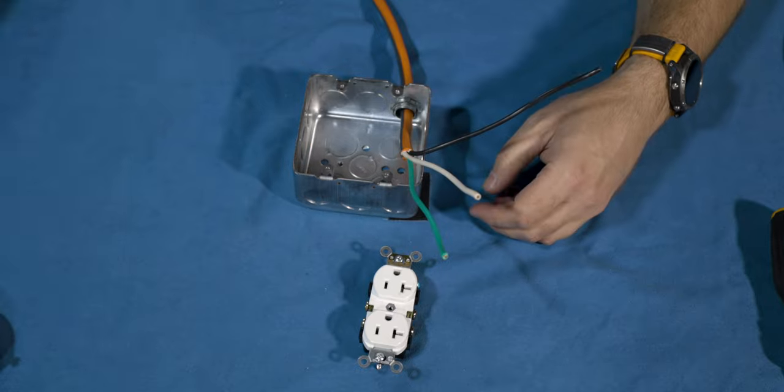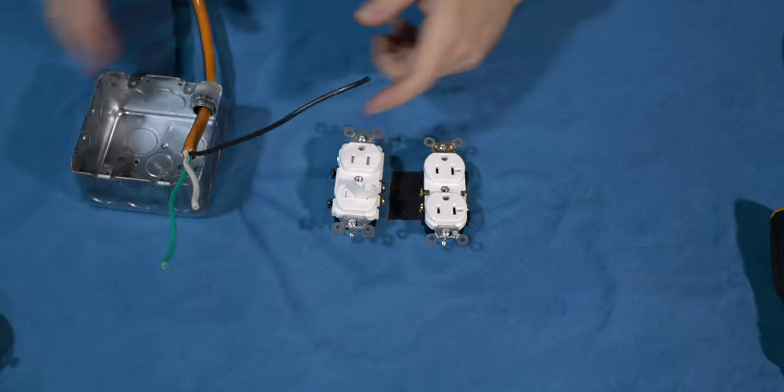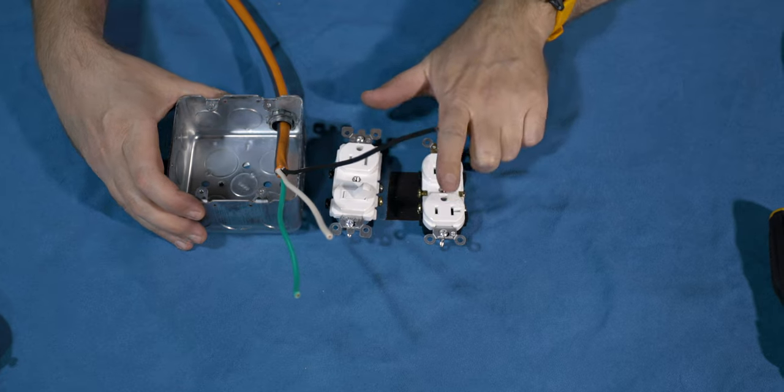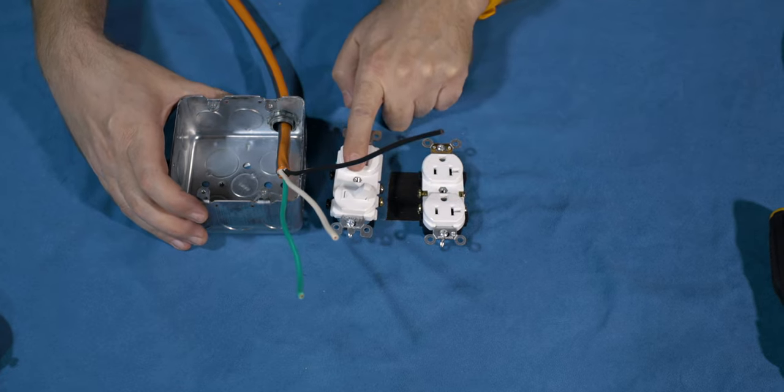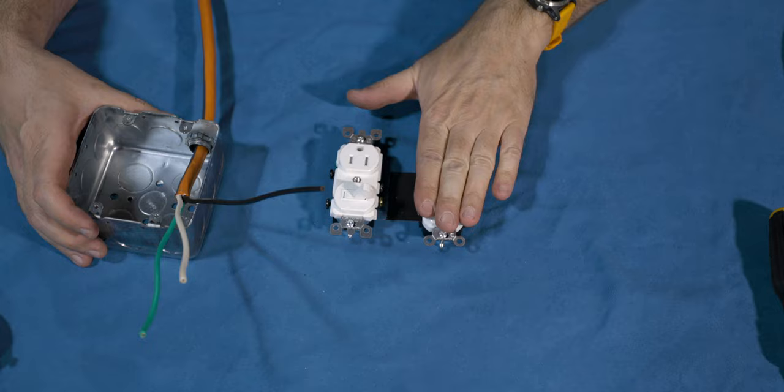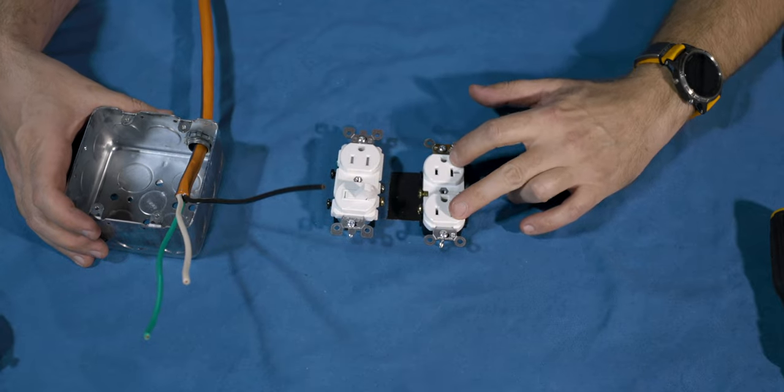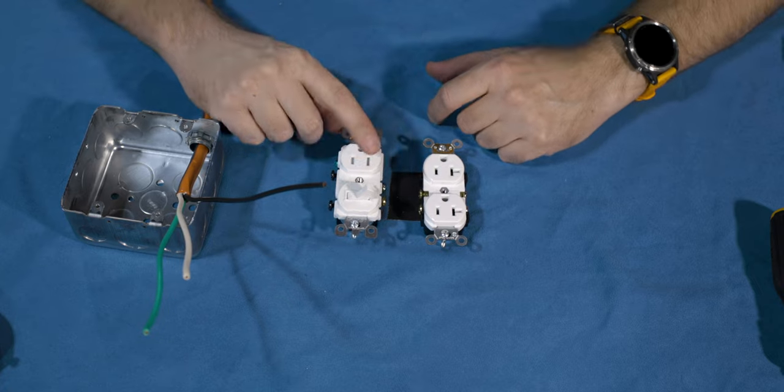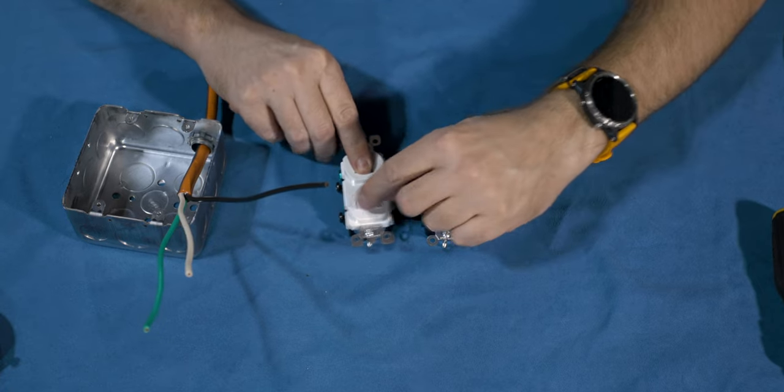So the way we're going to actually do this, wire in from the cable here, we're going to wire into this guy and then daisy chain from this guy to this one. That way these two outlets are always on. And then this one here will be controlled by the on off switch.